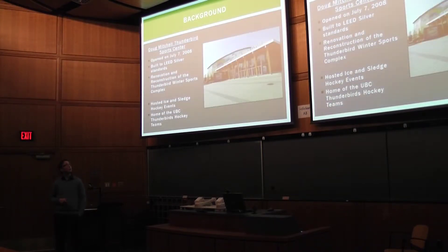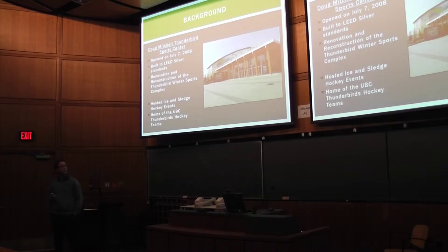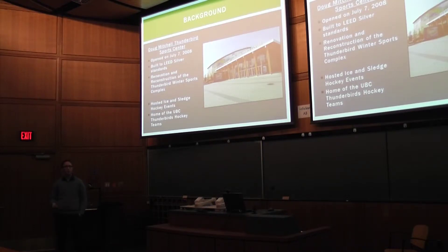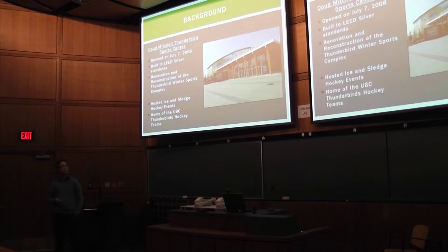The next building is the Doug Mitchell Thunderbird Sports Centre, officially opened in July of 2008 and also built to LEED Silver standards. It was a renovation and reconstruction of the Thunderbird Winter Sports Complex on the original site — they tore down pretty much the entire original arena, save the Father Bauer Arena, and rebuilt the new structure around it. During the Olympics it hosted ice and sledge hockey events, and it's now home to the UBC Thunderbird hockey teams.